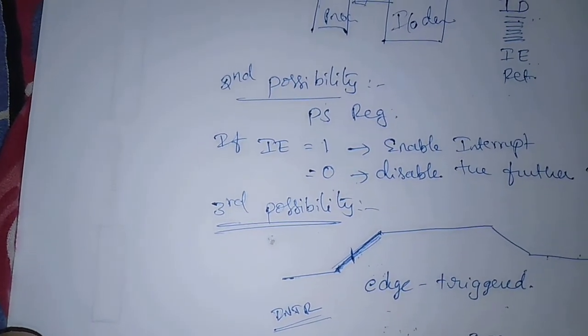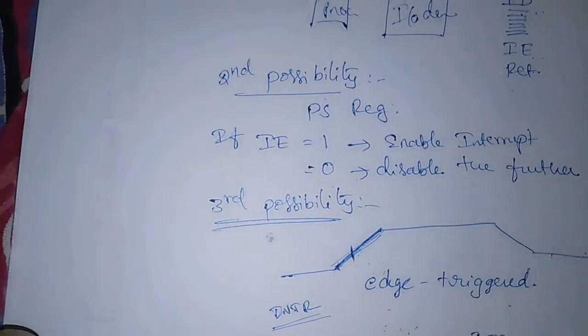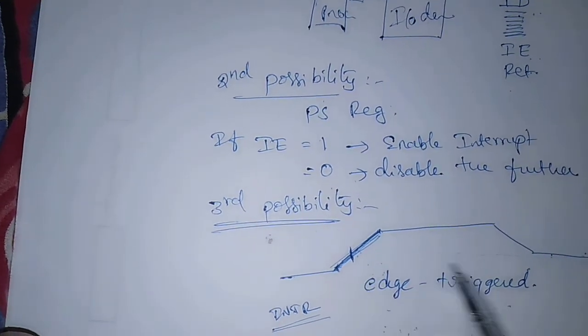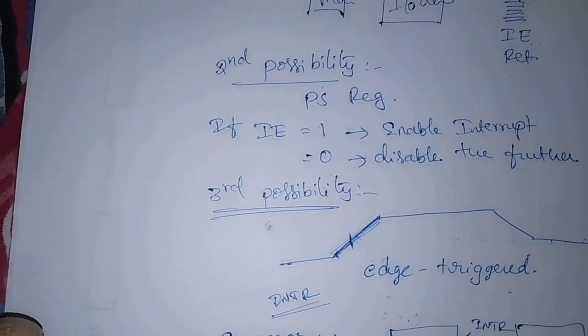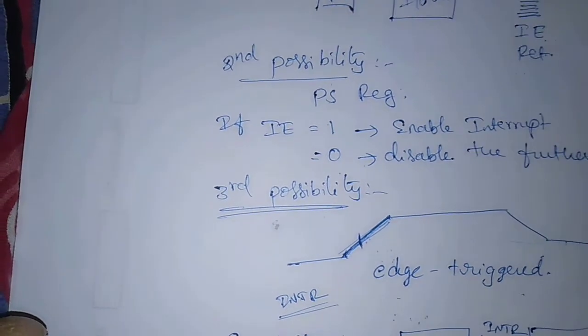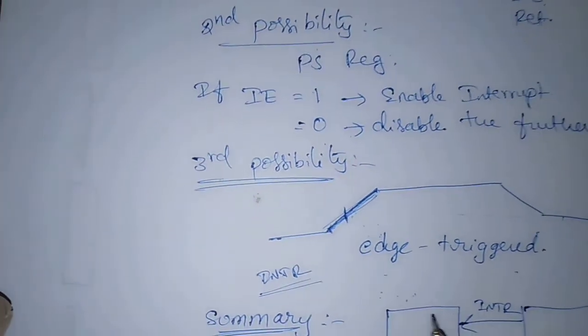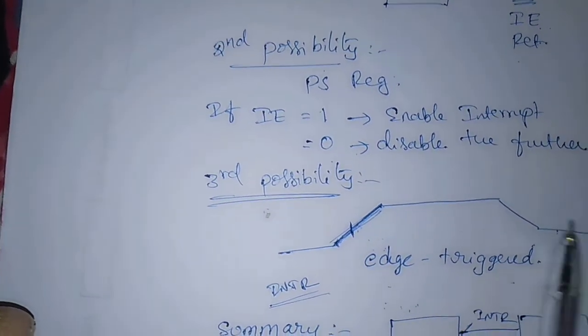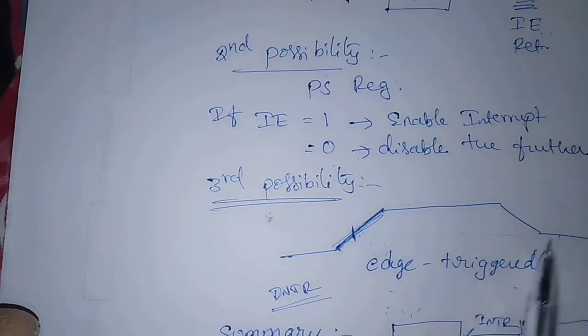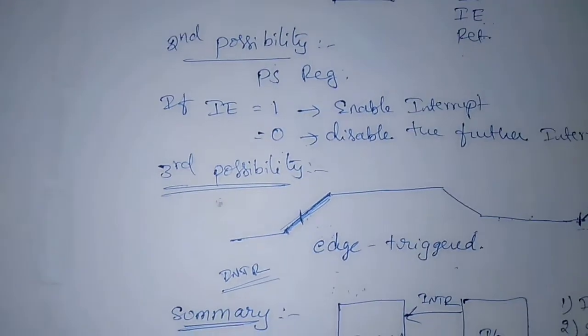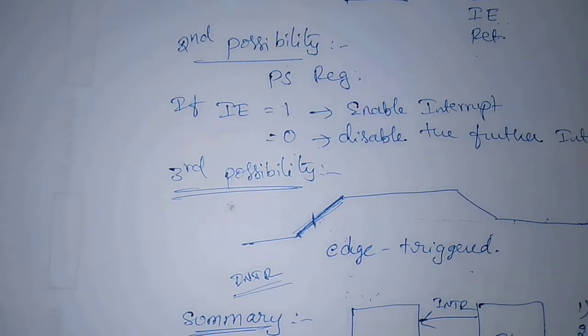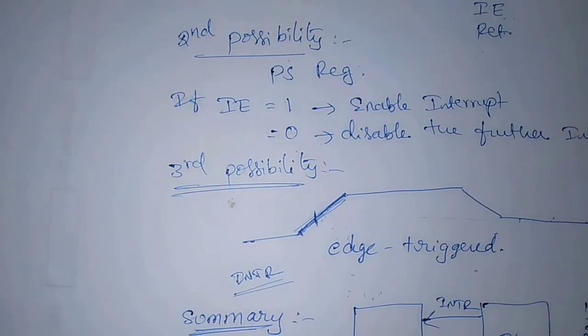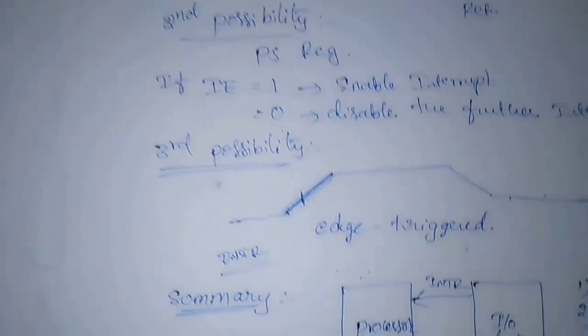Then processor performs the corresponding ISR routine until next edge triggered. So, during this period, no further interrupts will be allowed. Like that, interrupt can be disabled while executing the current ISR. And then, after completion of this, interrupt request will be enabled.